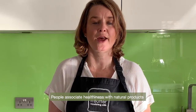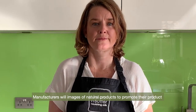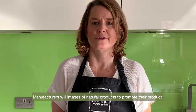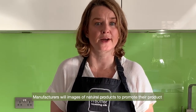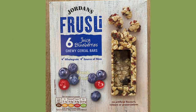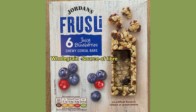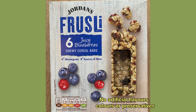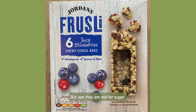People associate healthiness with natural products, so manufacturers will often use images of natural things to help promote their product. Take these cereal bars for example — they include images of fresh fruit and highlight good aspects such as a tick for whole grain, a tick for a source of fibre, and they tell us there are no artificial flavours, colours or preservatives. However, this is very much a distraction from the fact that these cereal bars are red for sugar, containing as much as 10%.